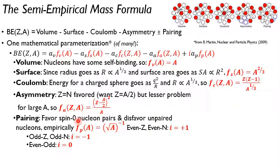So you basically favor these nucleon pairs. You disfavor unpaired nucleons. And so empirically, this winds up going as 1 over the square root of the mass number. I've never seen a good physical justification for this functional form. It just kind of is.